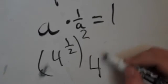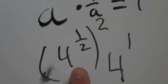It equals 4. Now what number to the second power is equal to 4? 2. Okay. So that means 4 to the 1 half power has to equal what? 2.